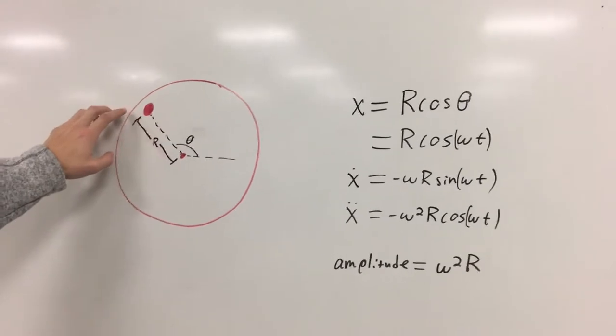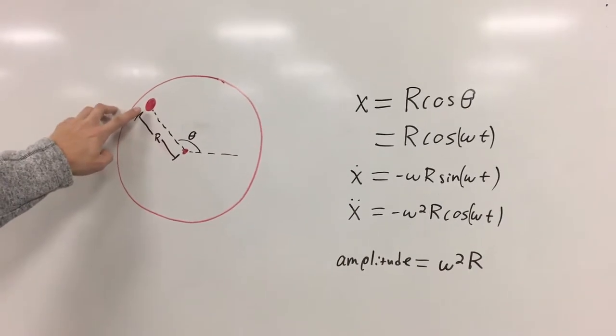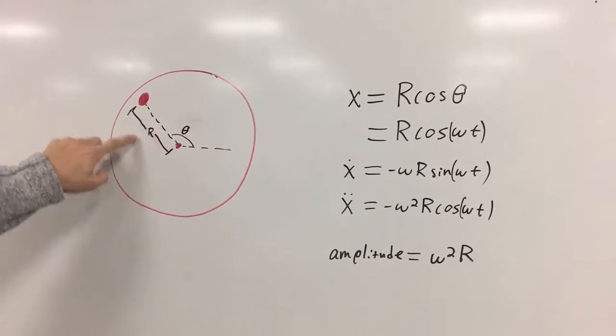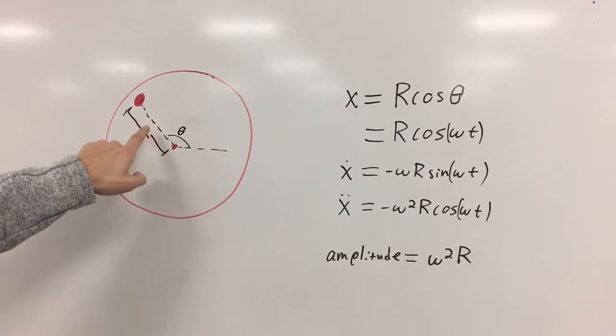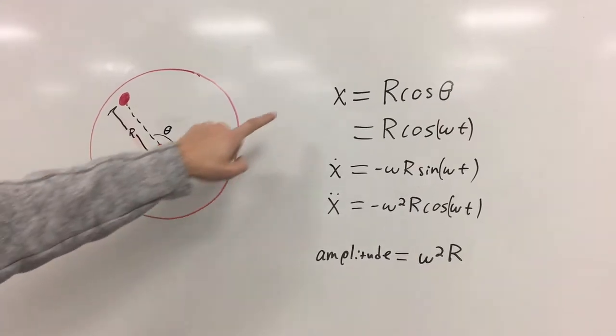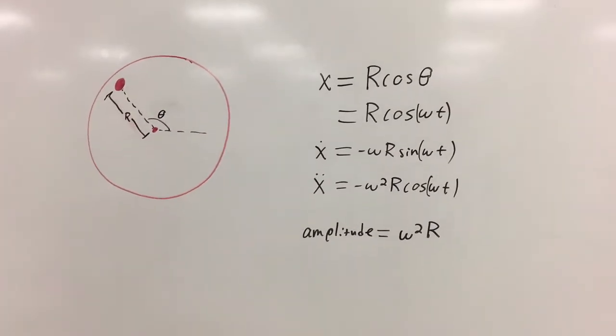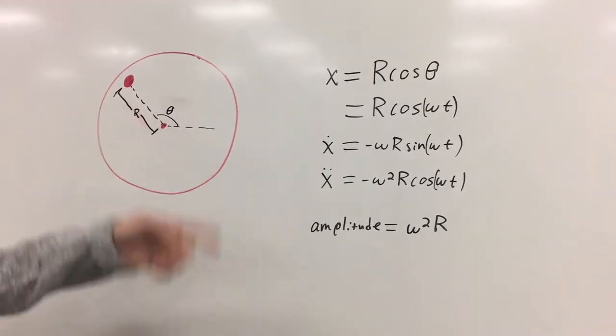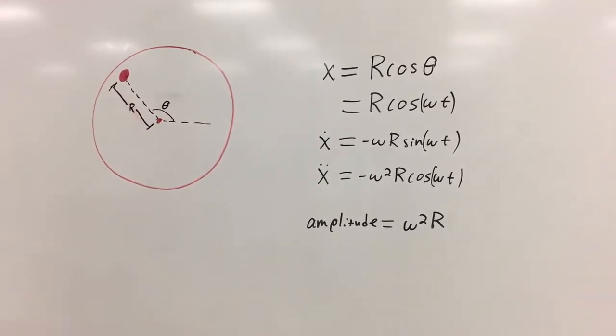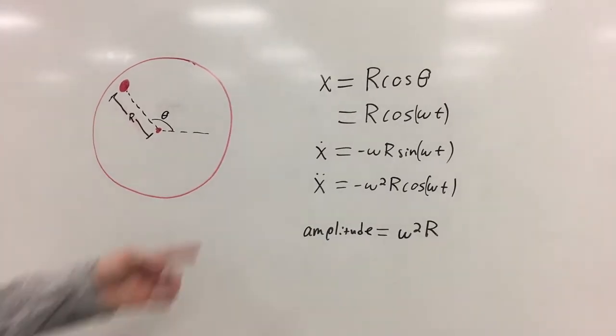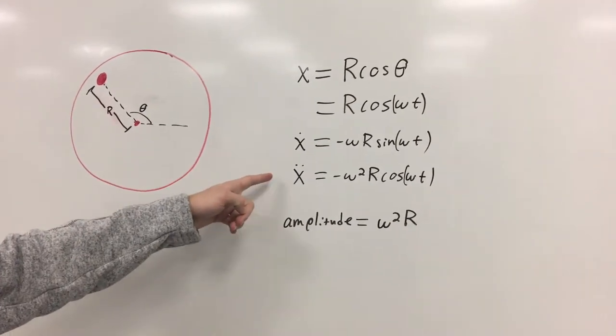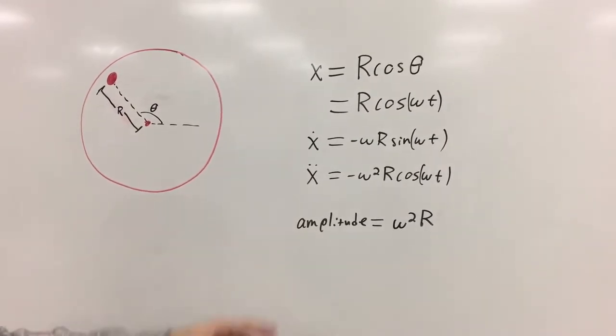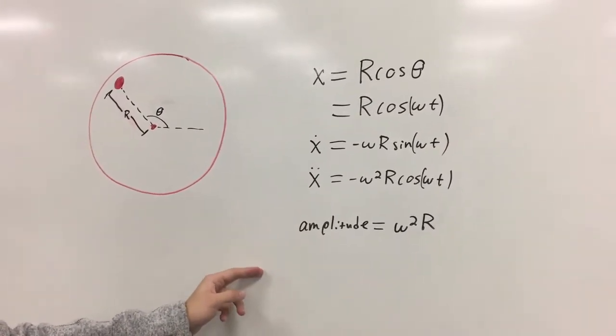To get the acceleration, we mapped the acceleration of the peg. It was at a distance r from the center, and then the position relative to r theta can be x equals r cosine theta. Theta is just equal to omega t, and the omega is from our RPM from the motor. Differentiate that twice, and we get the acceleration equals negative omega squared r cosine omega t. So the amplitude of that is omega squared r.